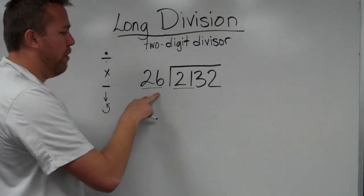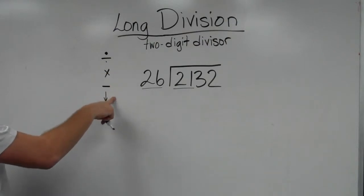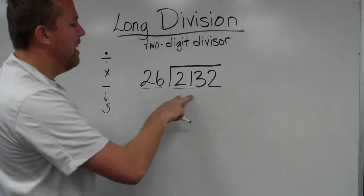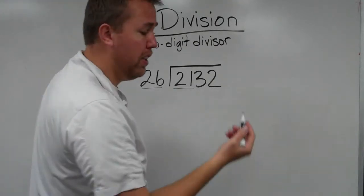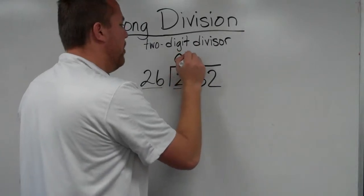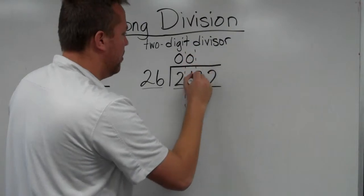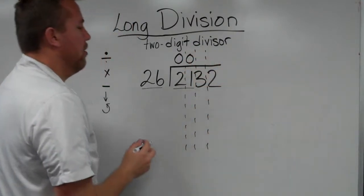26, if we remember our steps: daddy divides, mommy multiplies, sister subtracts, brother brings down, Rufus repeats. Daddy tries to divide 26 into 21. No, we don't know, it doesn't go in. So make sure you have those zeros directly above because we want to keep the place values the same all the way down.